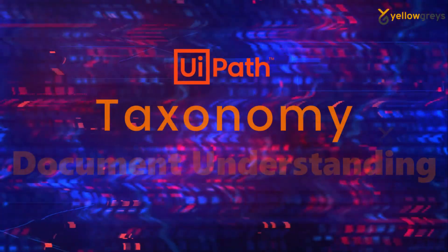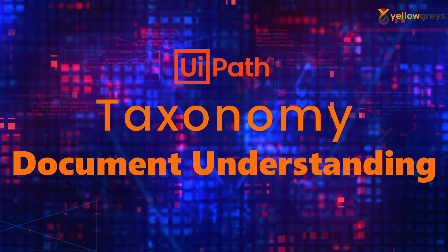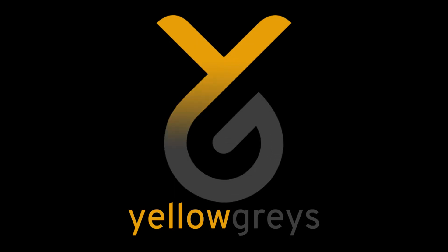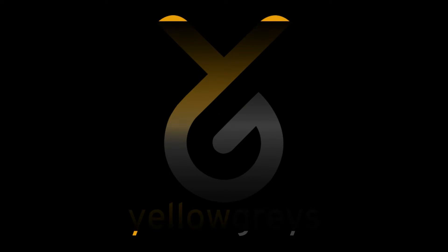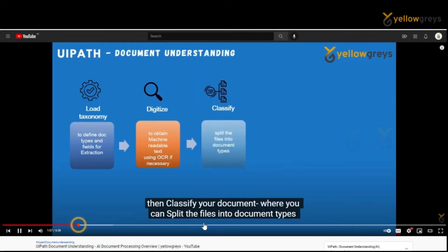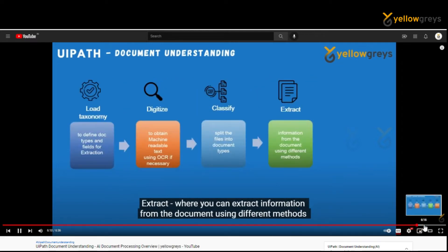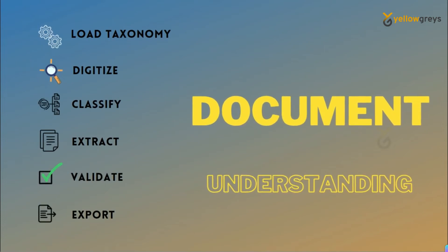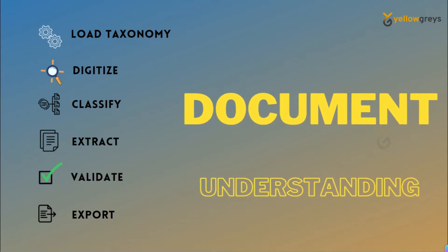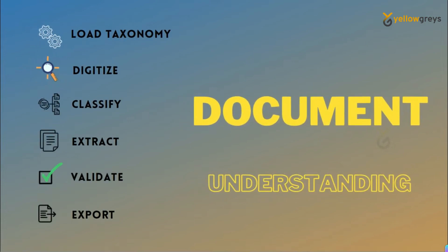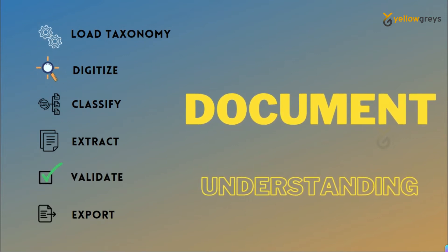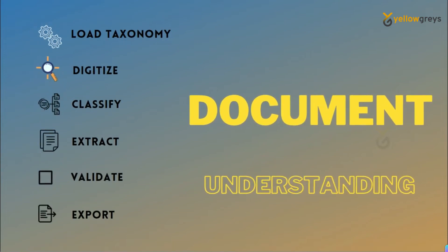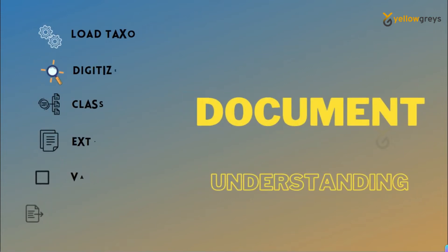Hello everyone, welcome to EllupRace. In this video we are going to learn about text handling in Document Understanding. In our previous video I explained Document Understanding and its entire framework. The entire Document Understanding framework contains six different parts: Load Taxonomy, Digitize, Classify, Extract, Validate, and Export. I'm going to prepare separate videos for each topic one by one so that you can understand very well.